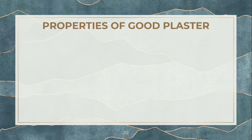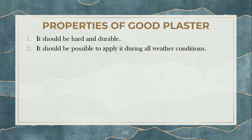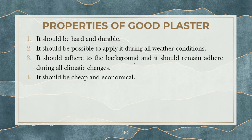Now let's see the properties of a good plaster. Obviously it should be hard and durable — whatever load is falling on it, it should be able to resist, and it should work for a long life. It should be possible to apply it during all weather conditions — summer season, rainy season, morning time, afternoon time. It should adhere to the background, because the purpose of plastering itself is to protect the surface. If the plaster is not sticking to the surface there is no use, and it should stick under all climatic conditions.